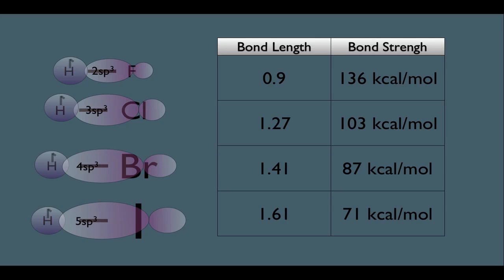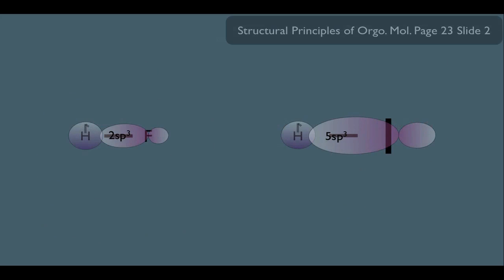But how does this help us understand bond strength? Why does it get less as you move down to the HI? Well, let's compare the HF to the HI.